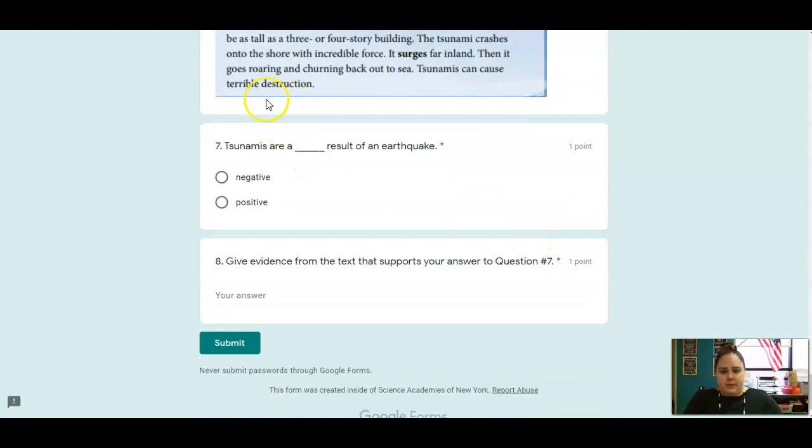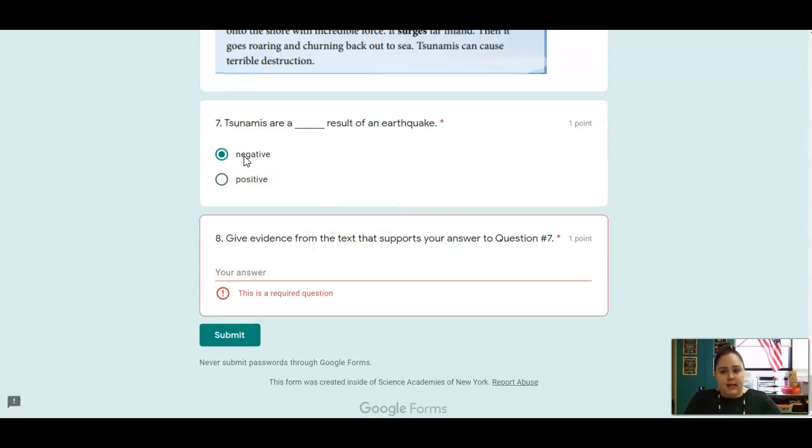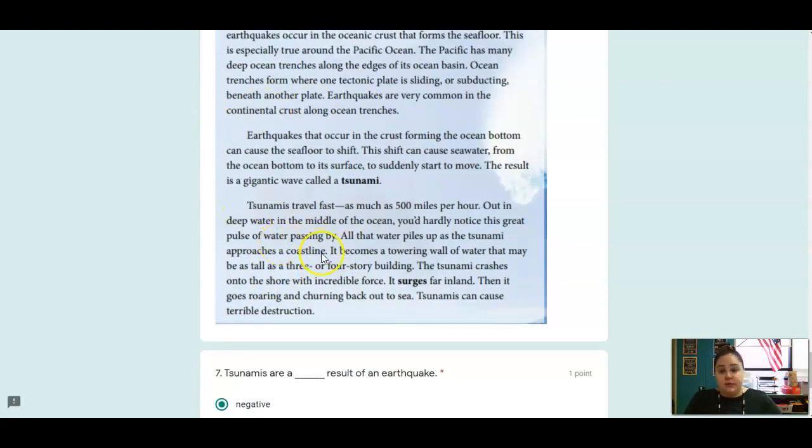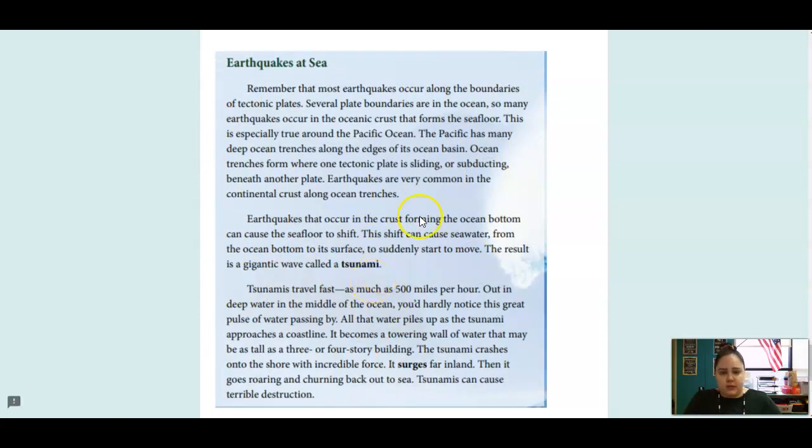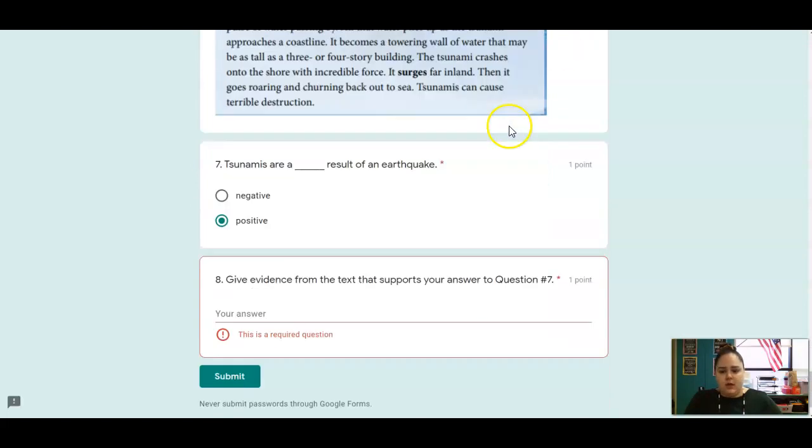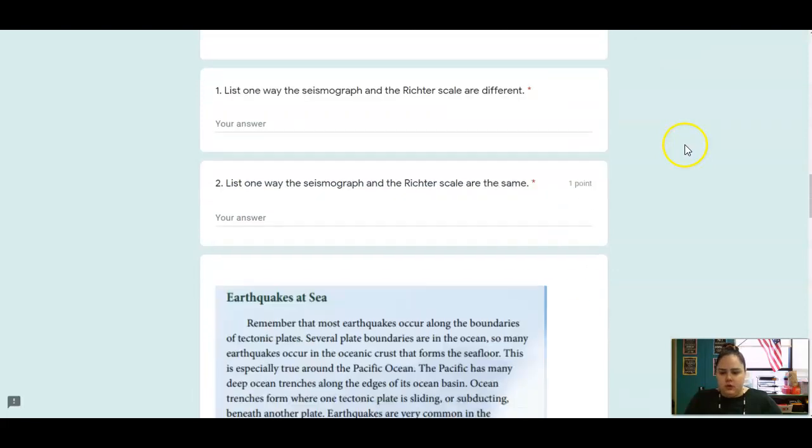Your next questions are about the tsunami passage. Number seven asks, tsunamis are a blank result of an earthquake. Are tsunamis something negative or something positive? You're going to give evidence from the text that supports your answer. If you think it is negative, find something here that tells you that it's negative. If it's positive, find something that tells you that they're positive. That's it for reading. Let's head on over to skills.